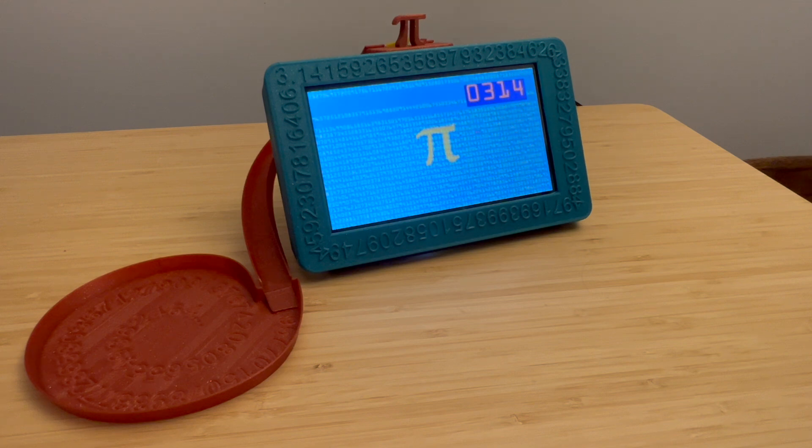The numbers get bigger at 3:14 and zero seconds, but Pi time is actually 3:14 and 15 seconds. Here we go, it's Pi time! How cool is that?